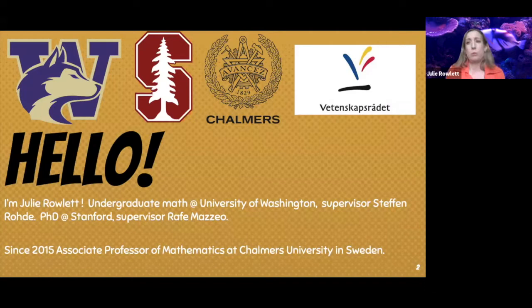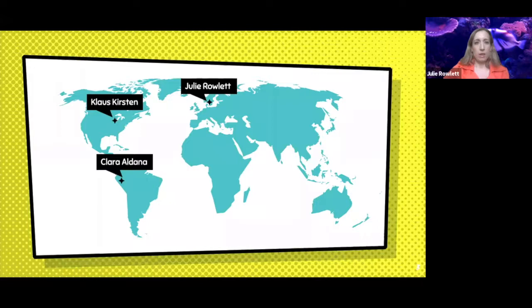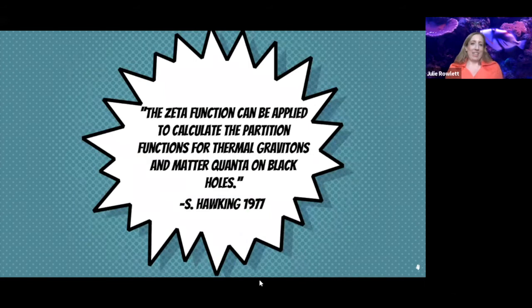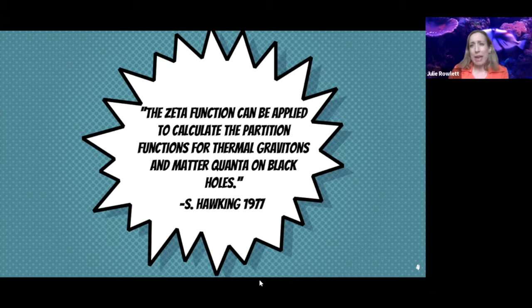My co-authors are Clara, who's in Colombia, and Klaus Kirsten, who's in Michigan. To quote Stephen Hawking, the zeta function can be applied to calculate the partition functions for thermal gravitons and matter quanta on black holes — which sounds really cool. It's an example of what I like to say: physics is just math with cooler words. I don't actually understand what this means, so if anyone does and would like to enlighten me, that would be great.